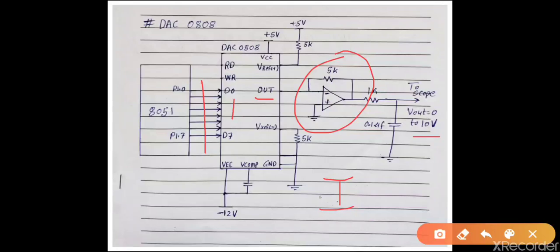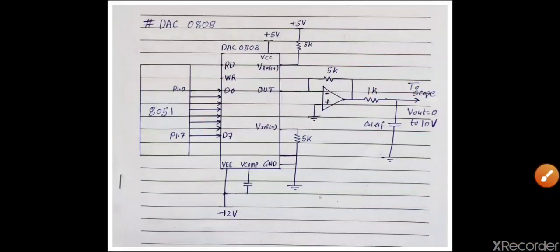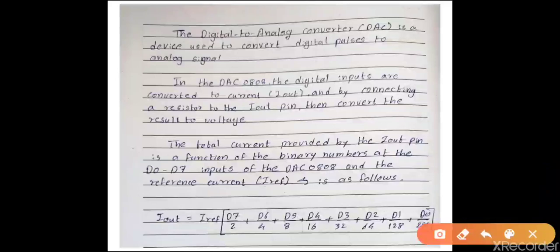Here you can get output analog voltage ranging from 0 volts to 10 volts. This output voltage of 0 to 10 volts is in accordance with the digital input signal. In the next slide we'll see how DAC converts a digital signal into an analog one. The output current I_out is a function of the reference current and D0 to D7 values.